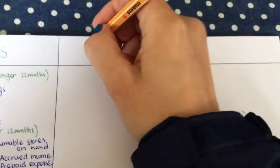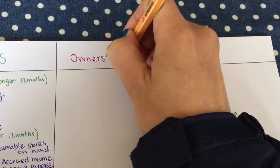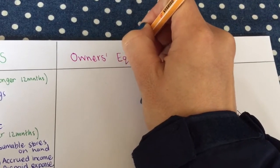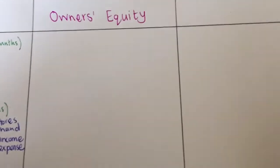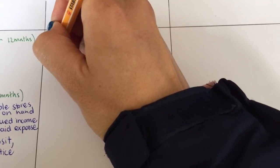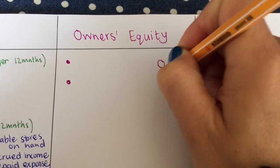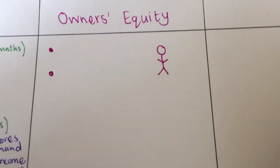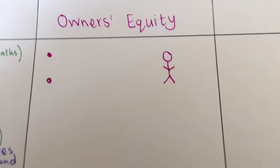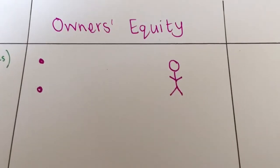If we then go to the top of the next column, we are now going to look at owner's equity. Owner's equity works a little different. We've got in Grade 10 two main accounts, and those two main accounts are linked to the owner.